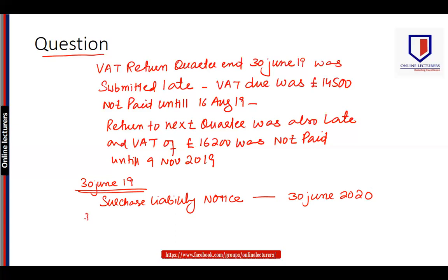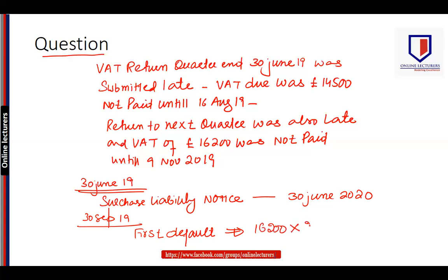For the next quarter ending 30th September 2019, this is the first default falling within the surcharge period. As it is the first default, the VAT outstanding of £16,200 is multiplied by 2%, giving a penalty of £324. However, as £324 is less than £400, the surcharge penalty is not applicable.